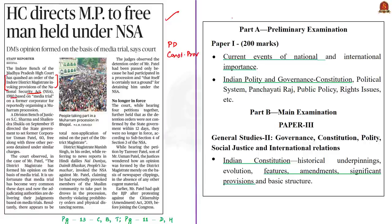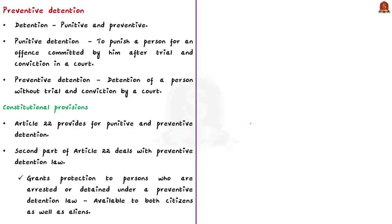The relevant syllabus is given here for your reference. What is preventive detention? Generally, a person is detained in two circumstances: one is punitive and the second one is preventive. Punitive detention is to punish a person for an offence that has been committed after trial and conviction in a court. Whereas preventive detention means detention of a person without a trial and conviction by a court. The purpose is not to punish a person for a past offence but to prevent that person from committing an offence in the near future. Preventive detention is only a precautionary measure and it is based on suspicion.